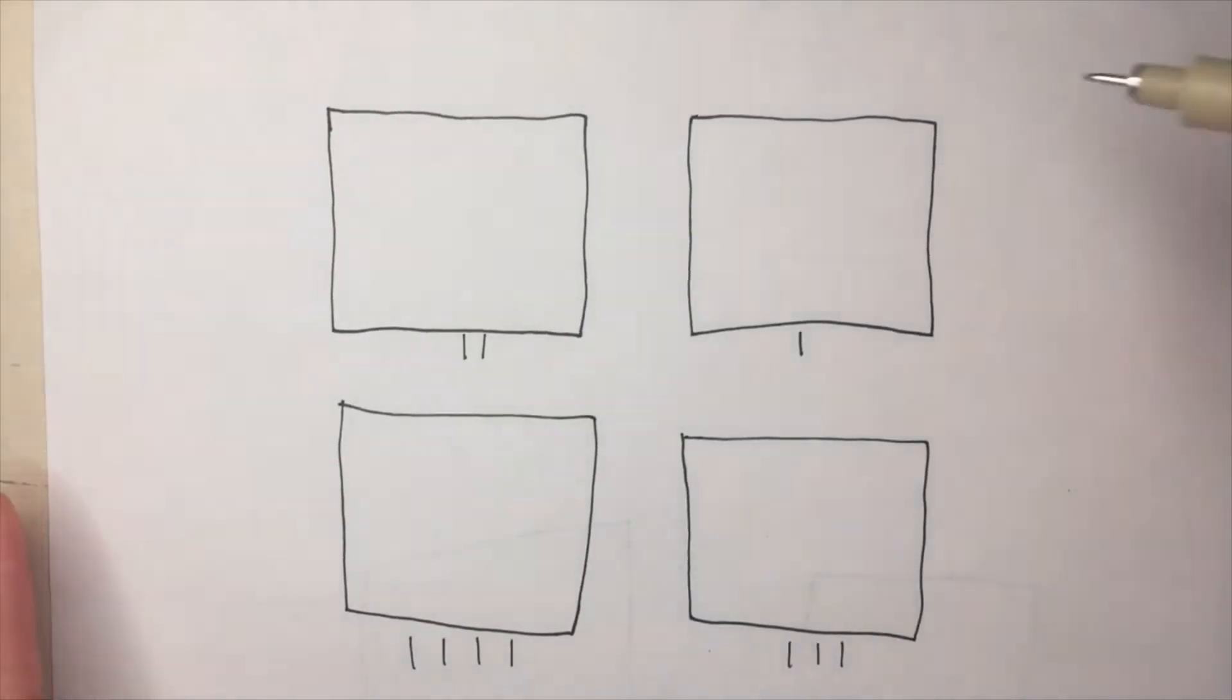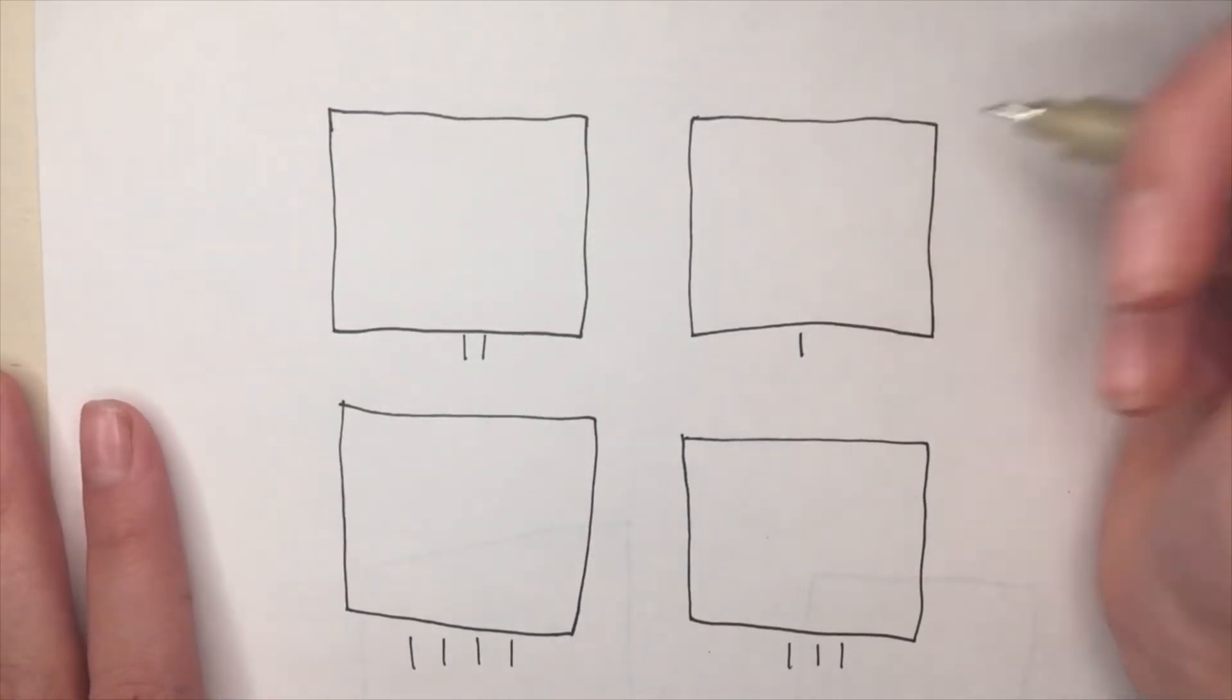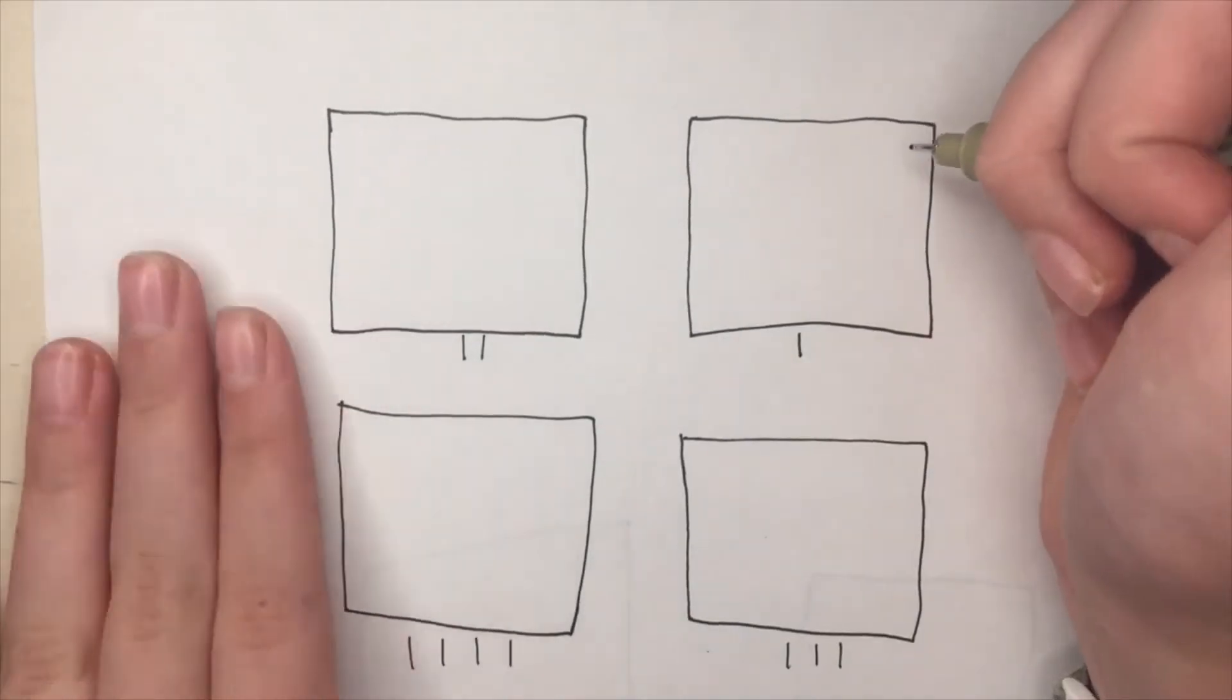So for the first step of Nippa, you are going to make small and big circles in your box. Just like this.